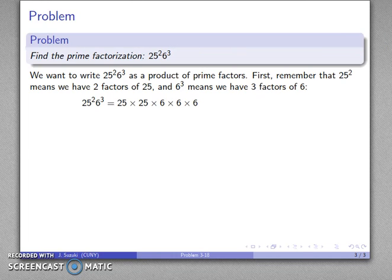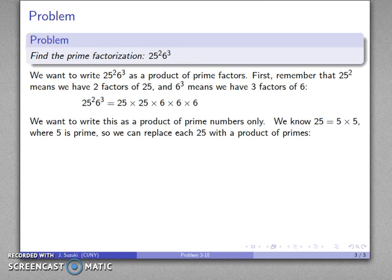And a little bit in more complicated problems, you may want to try to find a shortcut by exercising your problem-solving abilities. But in this case, just to get started, well, that's 25 times 25. There's our 25 to the 2nd. That's 6 times 6 times 6. There's our 6 to the 3rd. And I know that each of these non-prime factors can be written as a product of prime numbers. So, I'll do that.